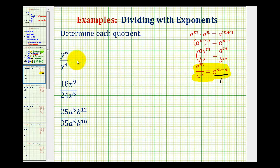Looking at our first example, we have y to the sixth divided by y to the fourth, so we'd have y to the sixth minus four power, or y to the second.